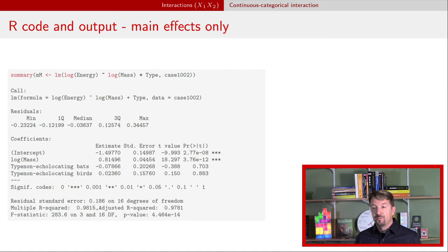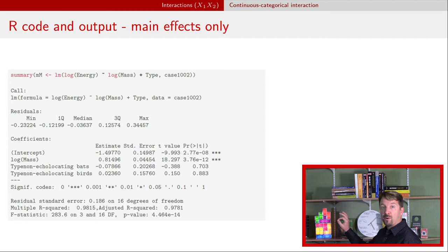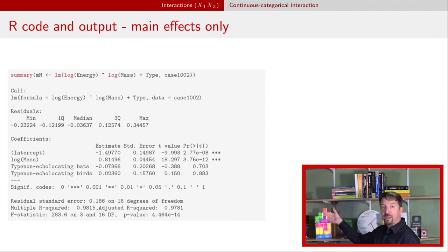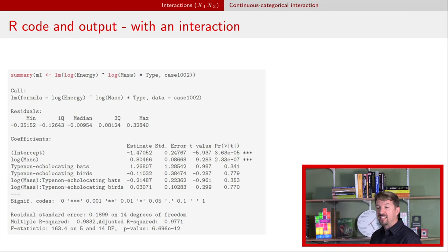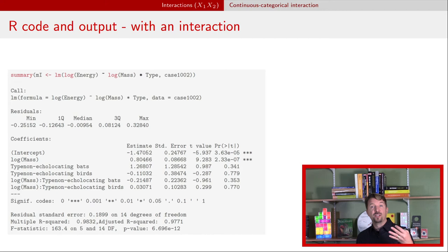In R, for this example it makes sense to take the log of the response and the log of mass. For the main effects model, include the categorical variable with a plus sign — you'll see four lines for beta-naught, beta-1, beta-2, and beta-3. For the interaction model, change plus to an asterisk; this adds two additional lines for the interaction. In R, those interactions are indicated by colons — for example, log-mass colon non-echolocating-bats, and log-mass colon non-echolocating-birds.